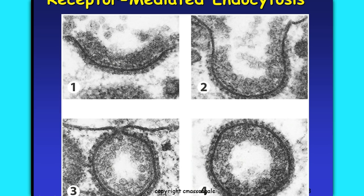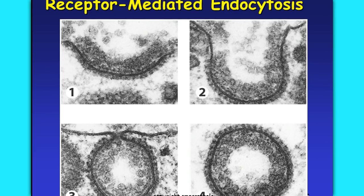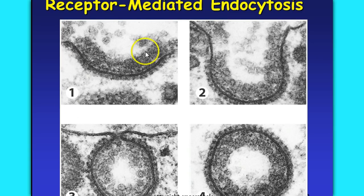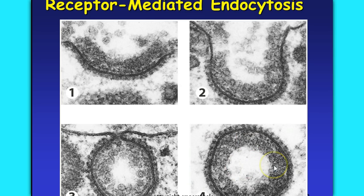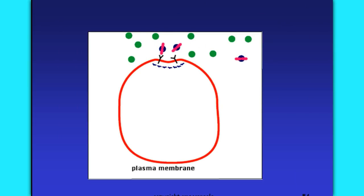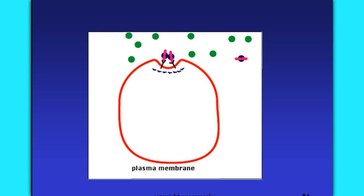The image we looked at earlier was of receptor-mediated endocytosis. We can see how it starts with everything on the surface, then the invagination forming, the cell membrane about to pinch apart, and then the vesicle on the inside. This is actually showing viruses entering inside one of the nasal cells. Here's another diagram depicting that receptor-mediated endocytosis.